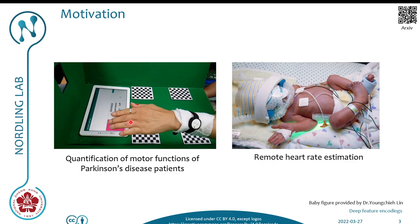Quantification of the motor function of Parkinson's disease patients is typically done through the Movement Disorder Society Unified Parkinson's Disease Rating Scale. A doctor scores the motor function of patients using an integer-based scale that ranges from 0 to 4. We want to replace this with a more objective and fine approach using deep learning to analyze the videos of the motor test.